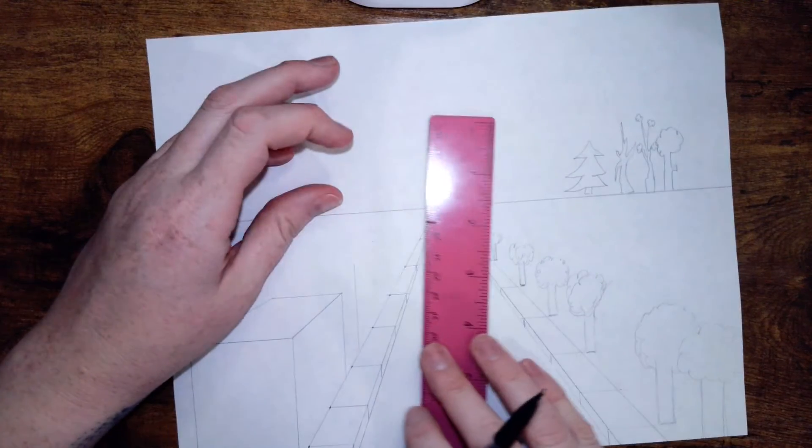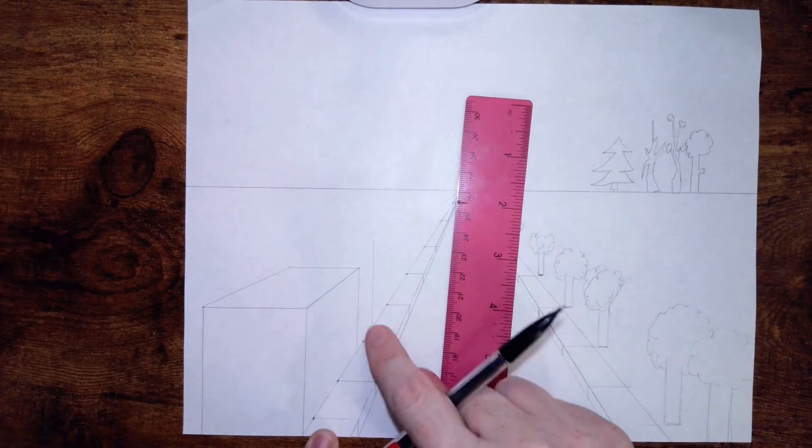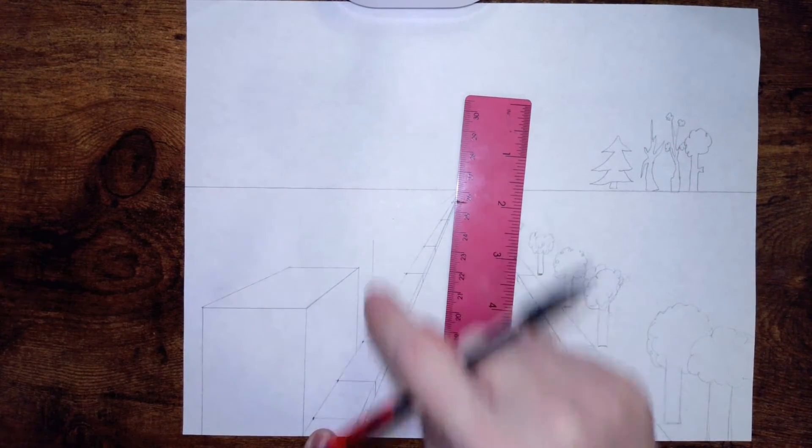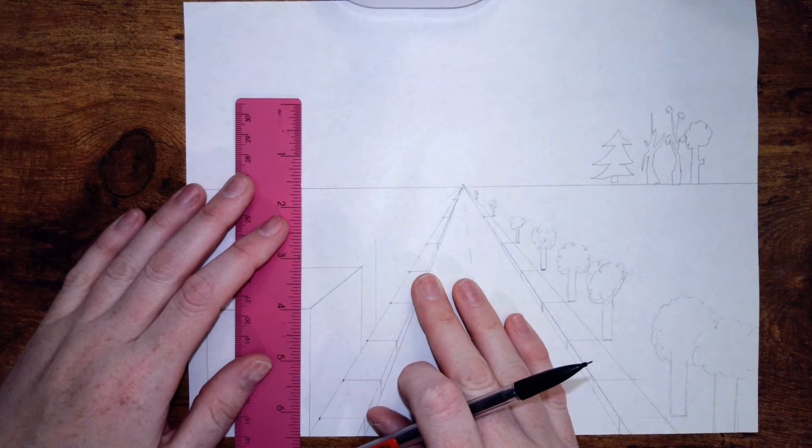I'm going to draw a line, and essentially what I'm doing, just like we did here, I'm creating a rectangle, but it's going to be behind this one. So draw a second line.